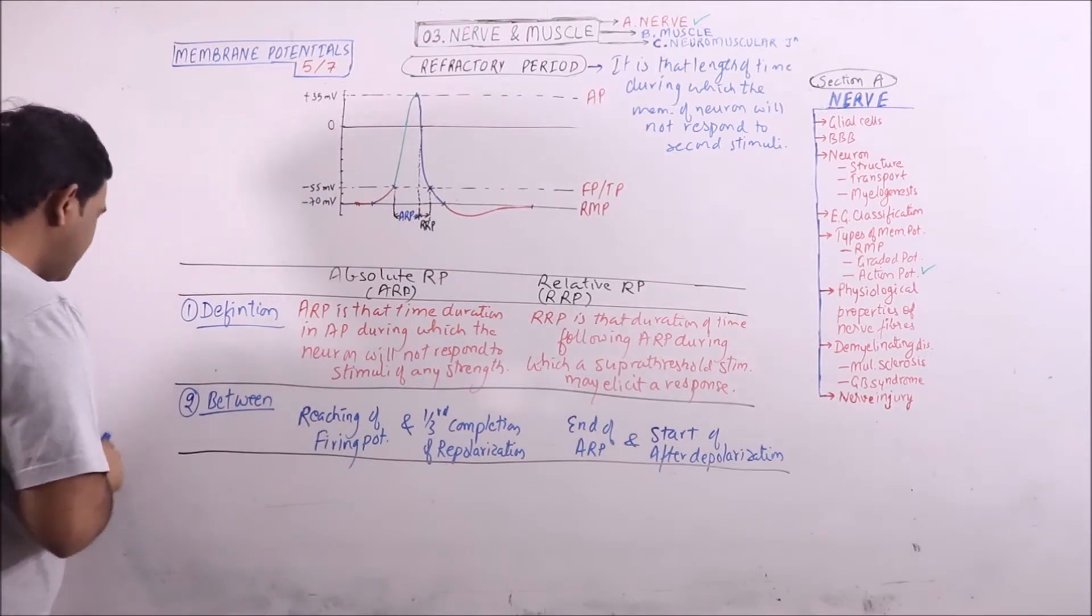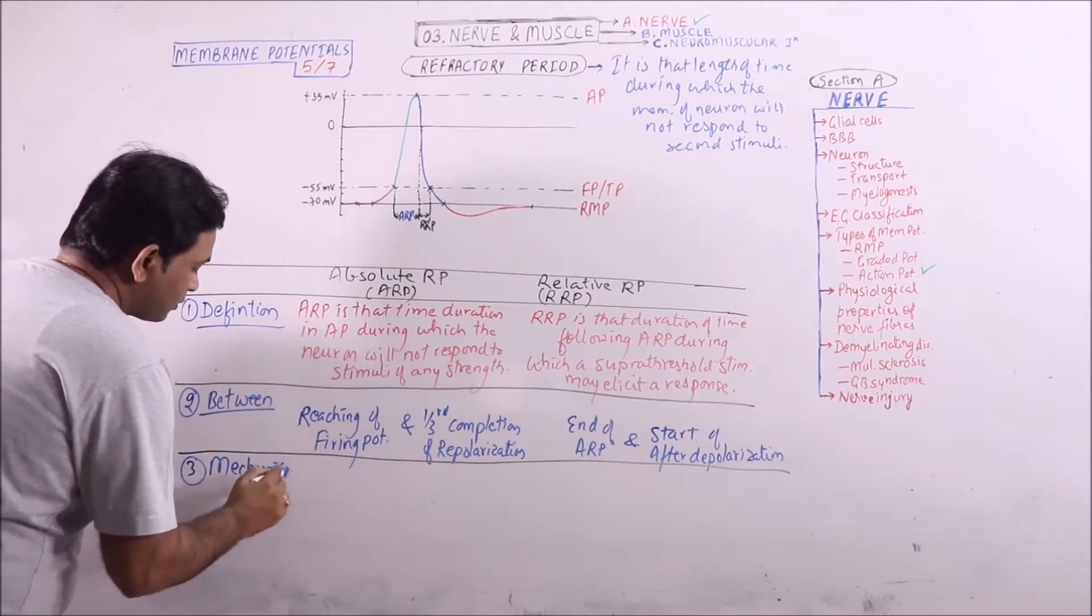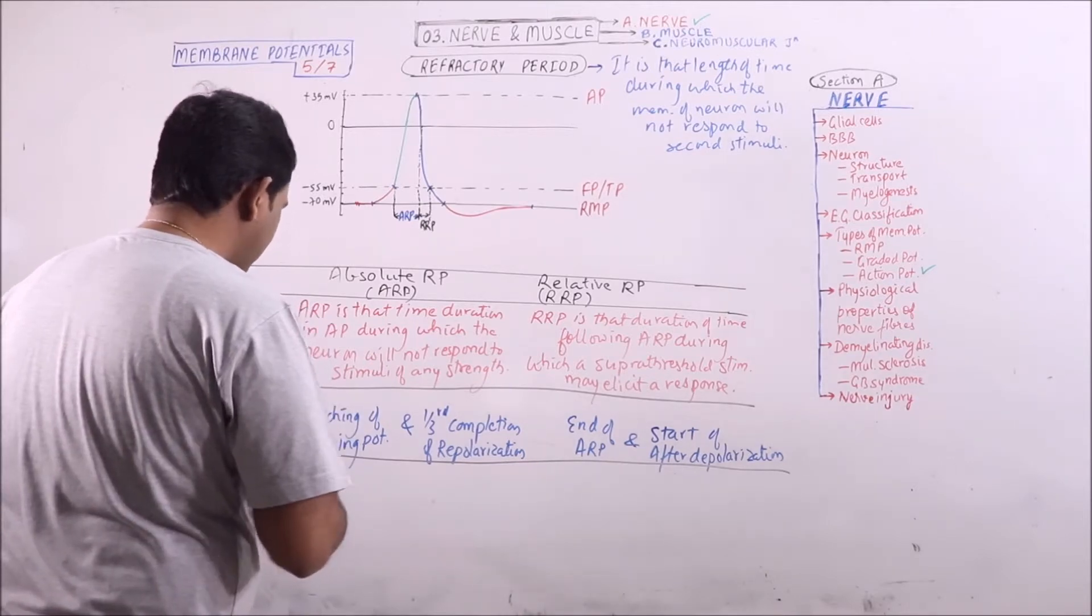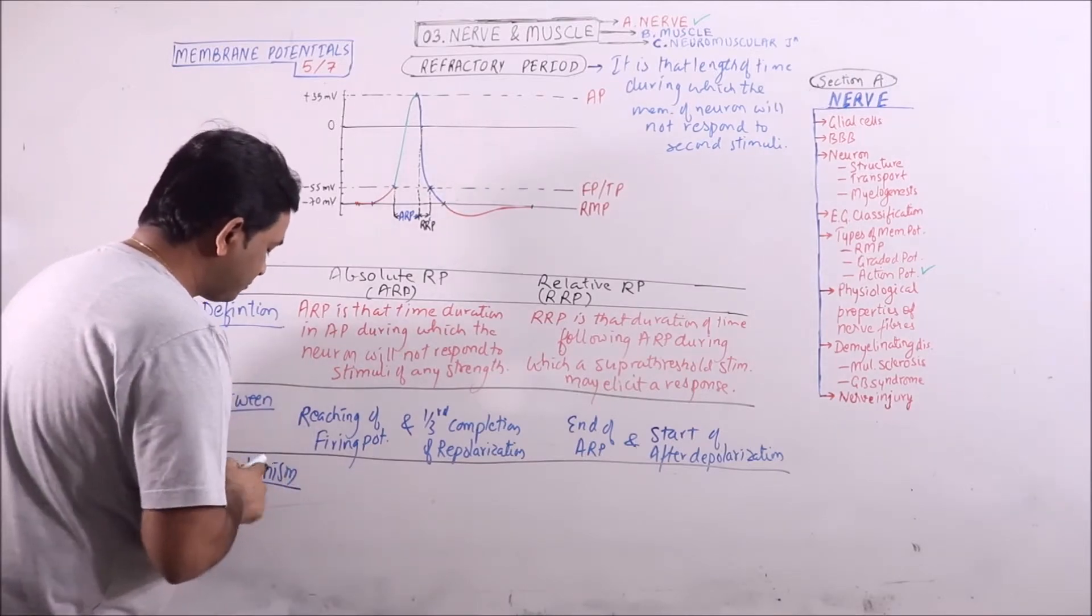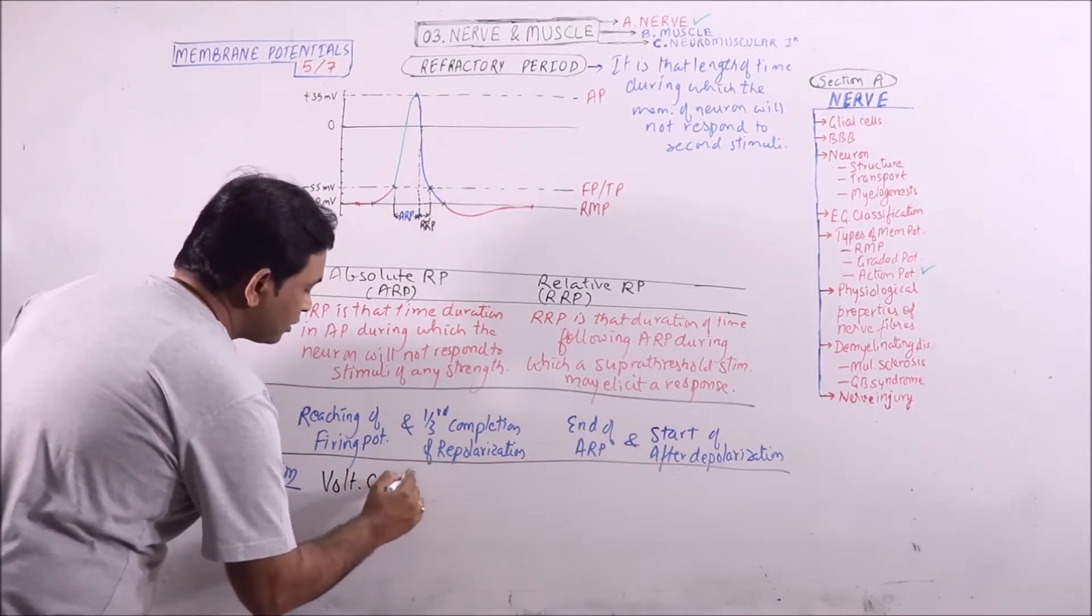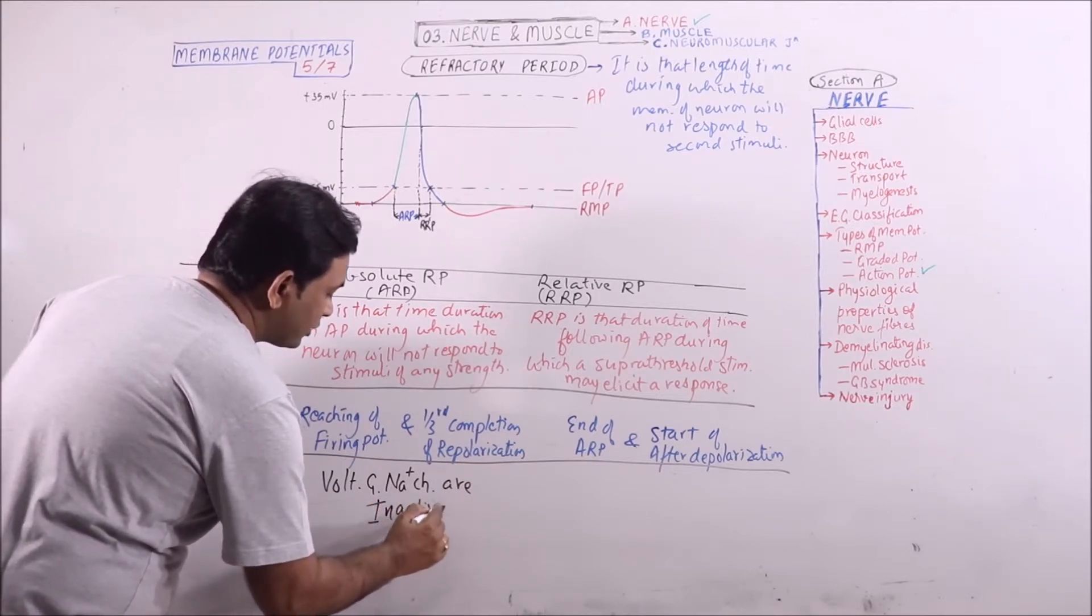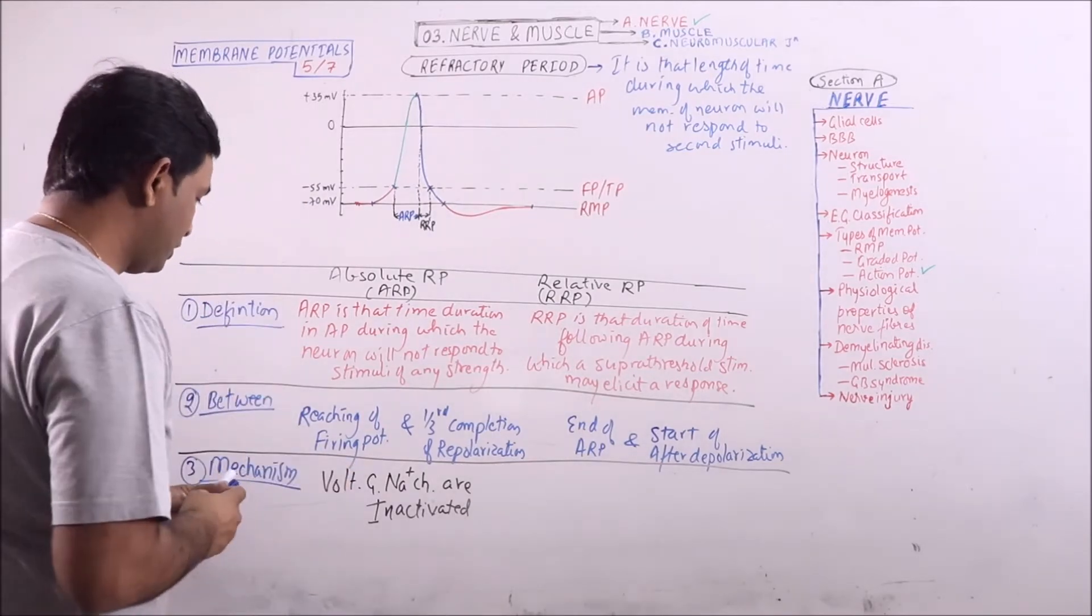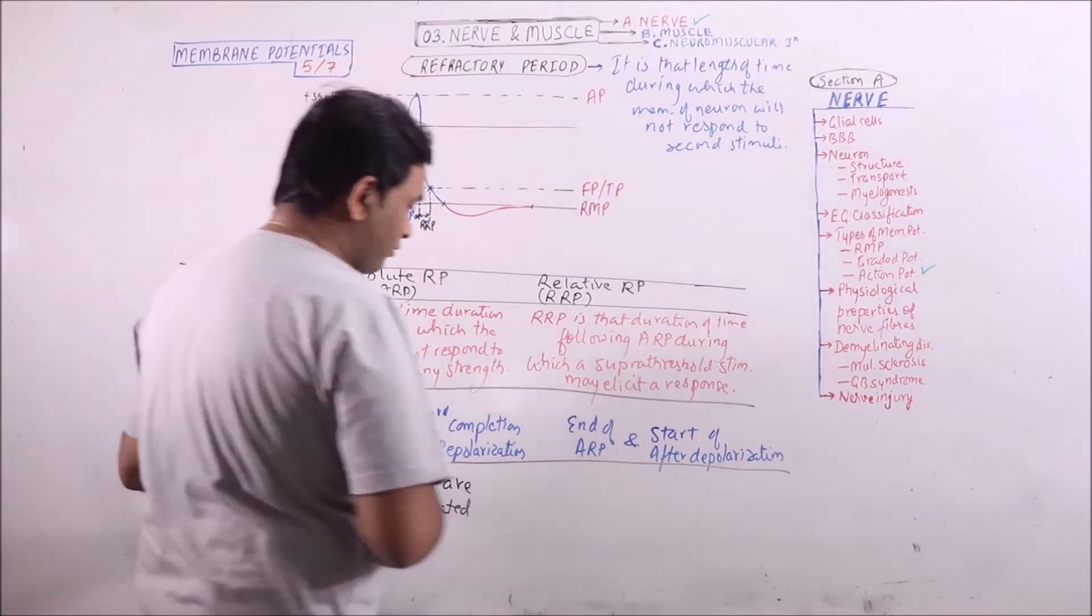Now what is the mechanism behind this? Why is it not responding to the stimuli of any strength? The mechanism is that the voltage-gated sodium channels are inactivated. Its importance is that it limits the number of firing potentials or action potentials in the nerve fiber.